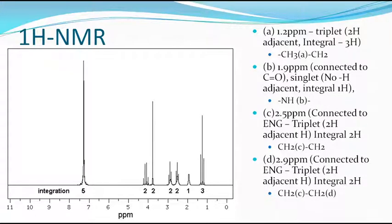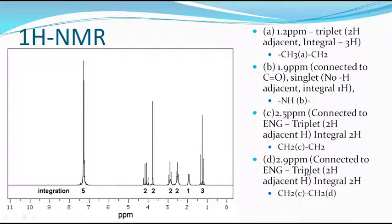There is a peak at 2.9 PPM, also highly deshielded, so it must be connected to an electronegative group — possibly nitrogen or oxygen. Since the value is higher than 2.2–2.5, it may not be directly connected to a carbonyl carbon, but rather to nitrogen. It is a triplet with two hydrogens, so I take this CH2 as signal D. Together I identify the CH2C and CH2D fragments.